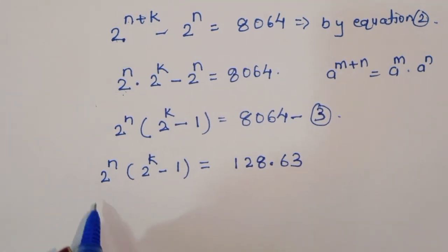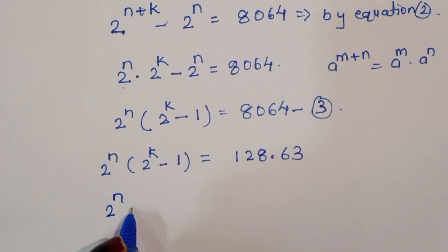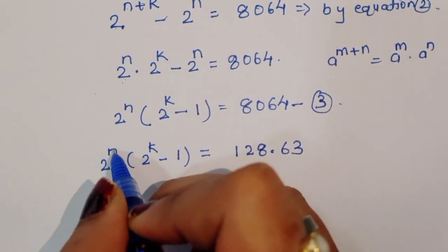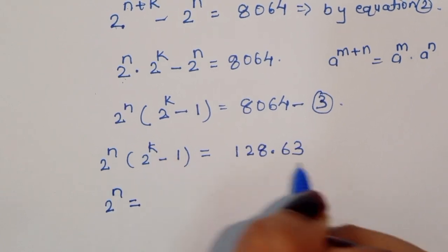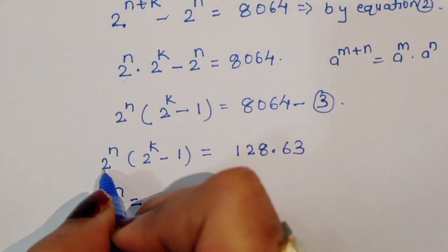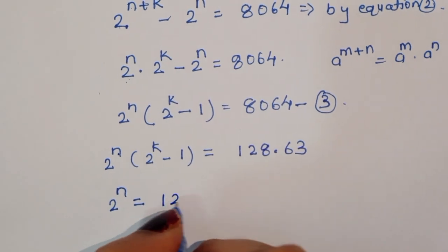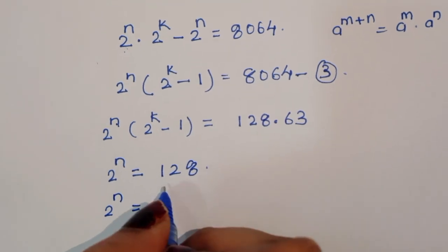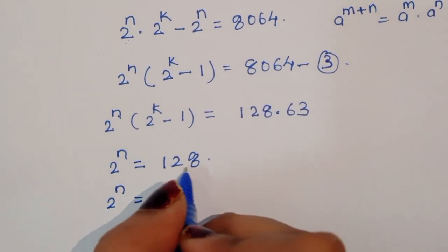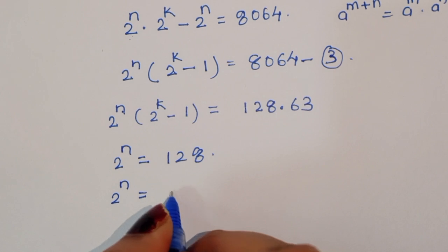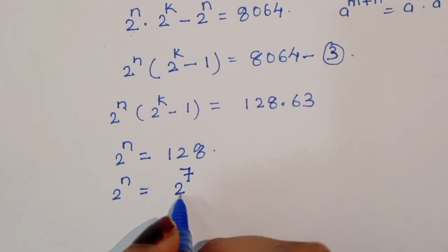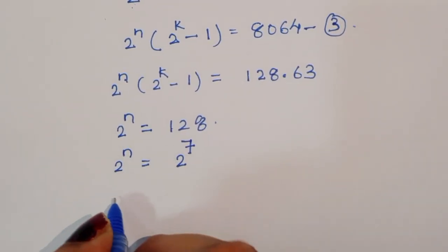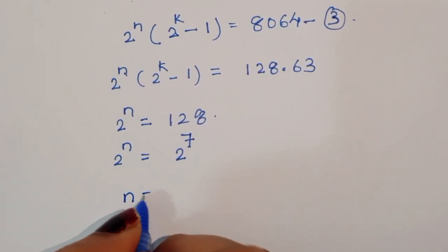Comparing factors, the first factor gives us 2 power n is equal to 128. In power terms, 128 is equal to 2 power 7. So 2 power n equals 2 power 7, which means n is equal to 7. This is the value of n.